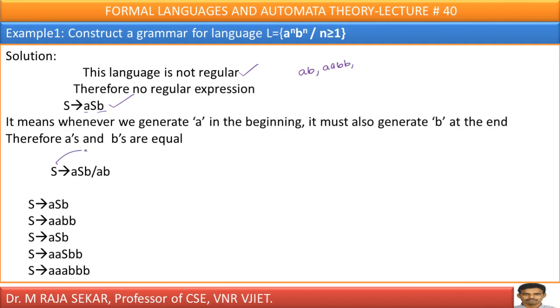If you take this production S goes to ab, yes, it is true. For n equal to 1, a power 1, b power 1, that is ab. If you want to generate aabb, how can I write? Just see, S goes to aSb.